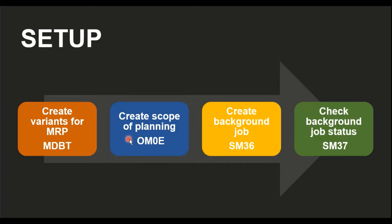Once the variants are created in MDBT, we need to create a scope of planning. This is needed only if you want to apply similar MRP parameters across multiple plants. For example, if you have three or four plants with unique planning parameters, you can create a single scope of planning, add those plants to it, and assign that scope to the MRP variant. This step is optional — if you're only configuring one plant, you can skip directly to creating the background job.